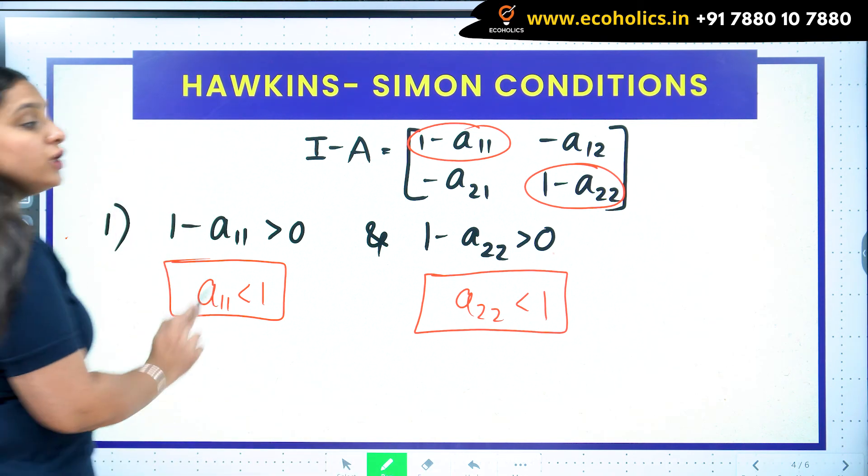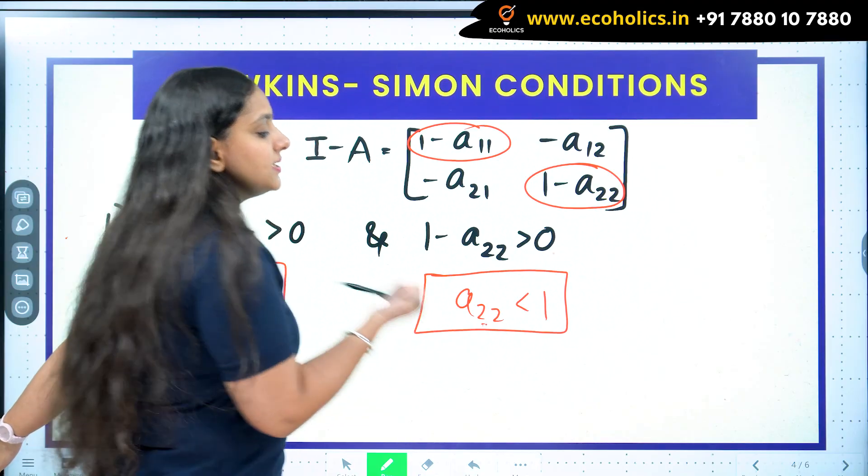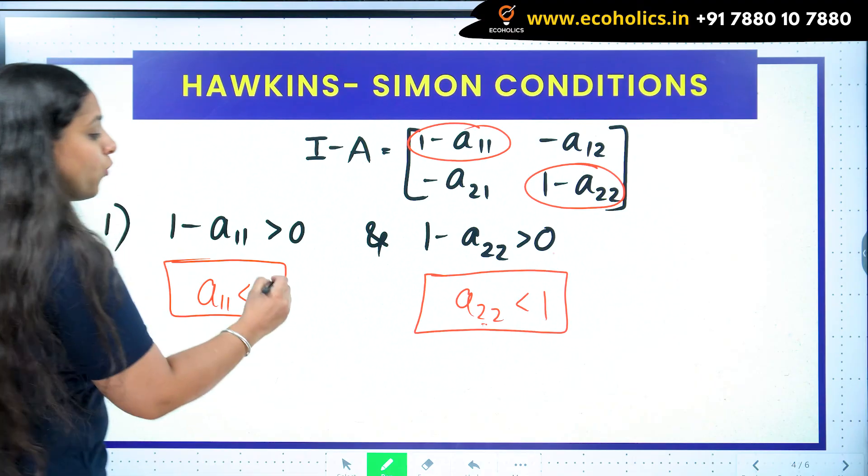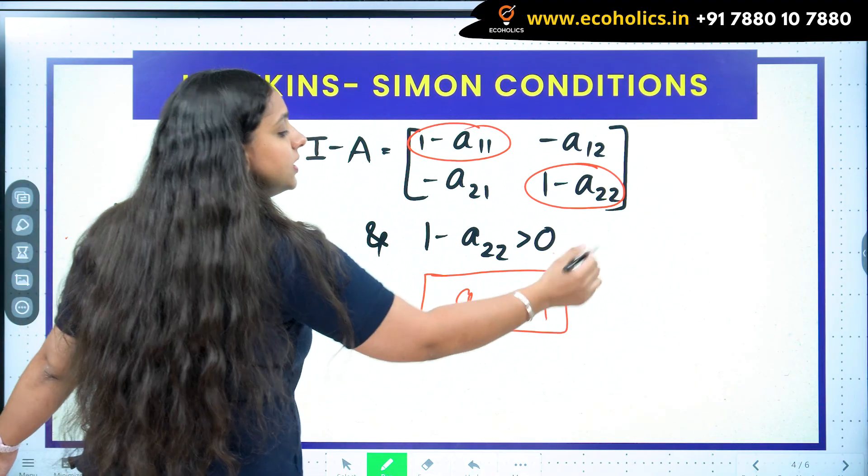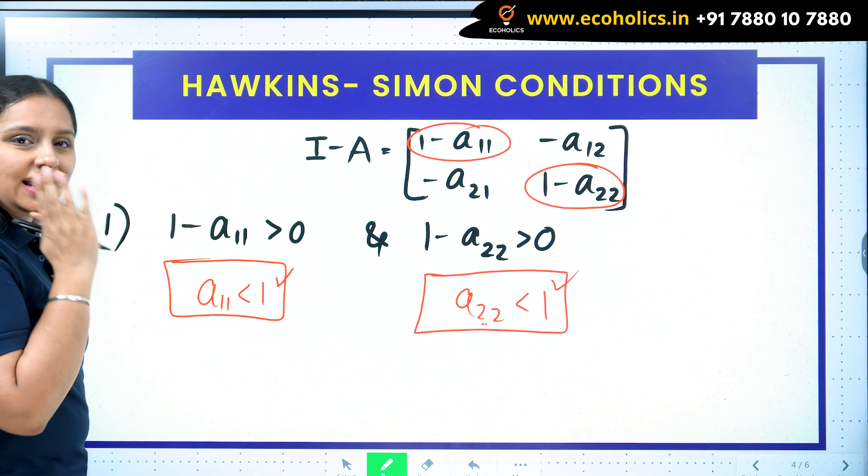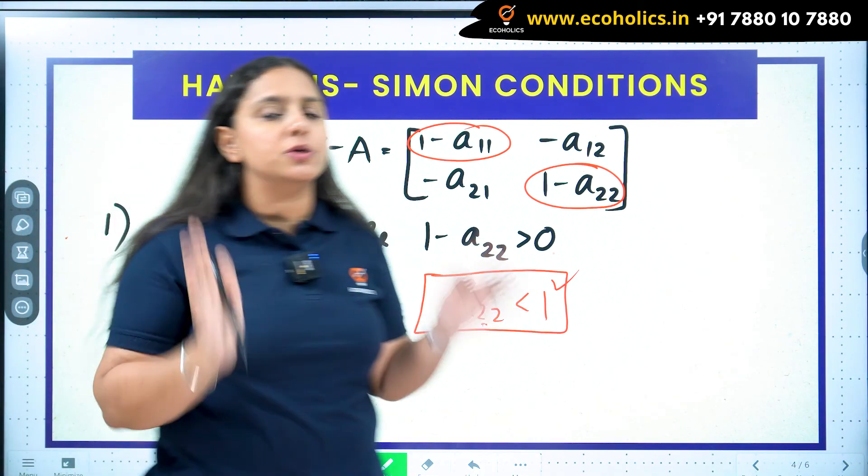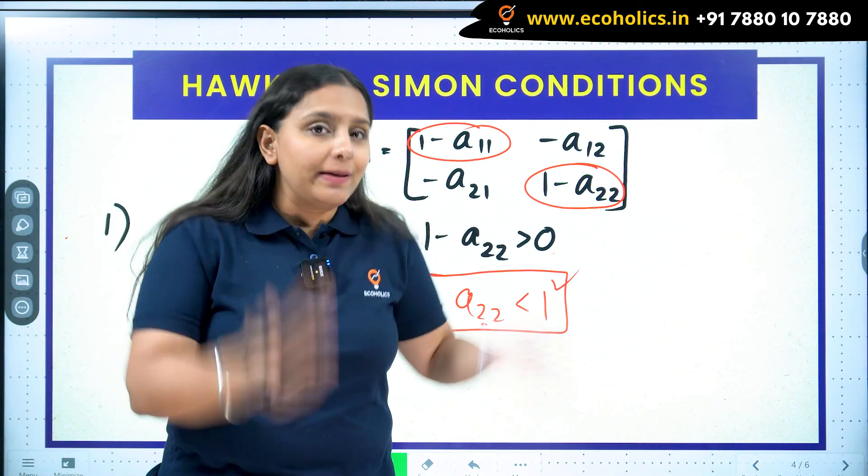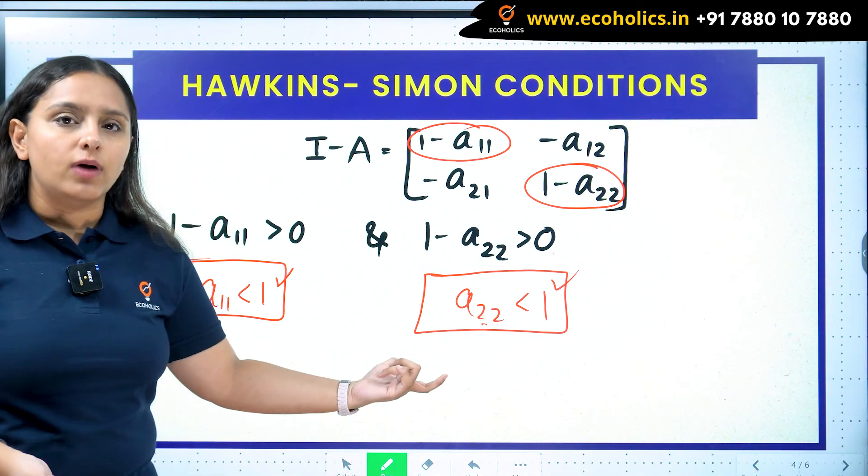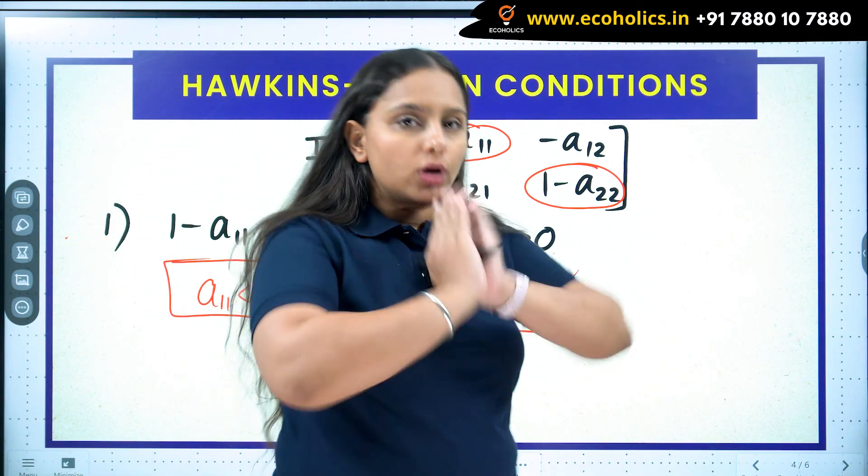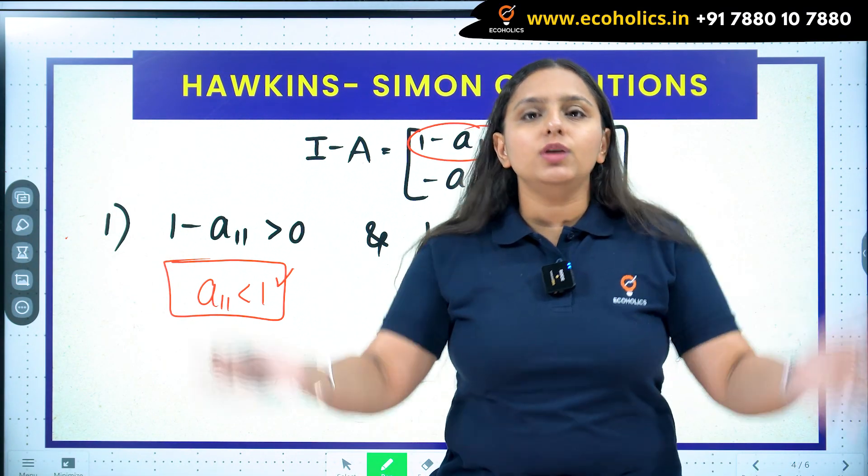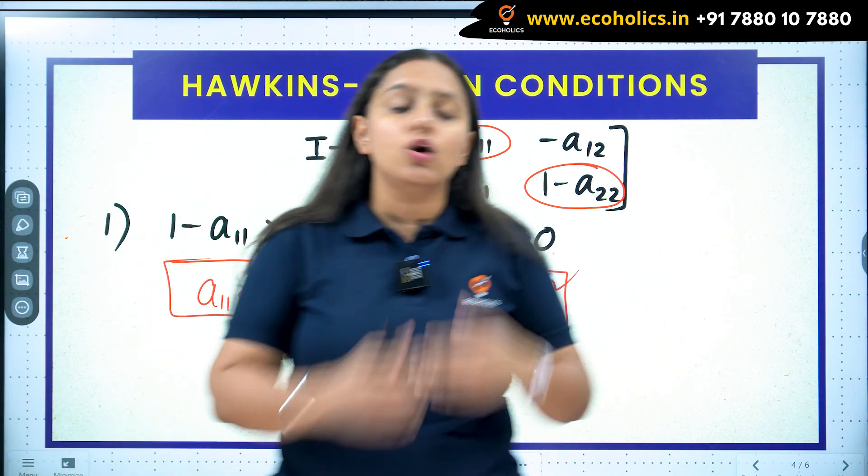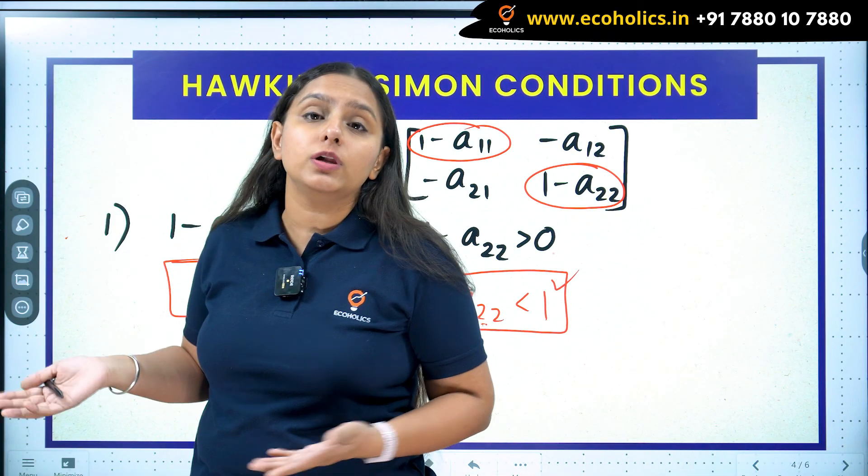So a_11 represents how much units of first industry are used by themselves. Similarly, a_22 represents how much units of second industry are used by themselves. So I want both of them to use not all of their output but less than 1. One represents the whole proportion, the 100% of their output. I want their input requirement for themselves to be strictly less than 1.